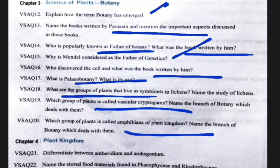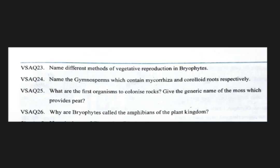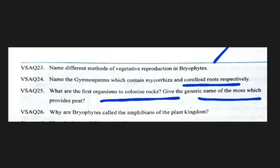From the fourth chapter also one very short answer will be coming. Important answers include: differences between antheridium and archegonium — antheridium is the male organ, archegonium is the female organ. The stored food material in Phaeophyceae is mannitol and laminarin, and in Rhodophyceae it is floridian starch. Other topics: methods of vegetative propagation, vegetative reproduction in bryophytes, gymnosperms with mycorrhiza and coralloid root systems, which organism colonized rocks first, and Sphagnum forming peat. Bryophytes are called amphibians of the plant kingdom as they need both water and land.